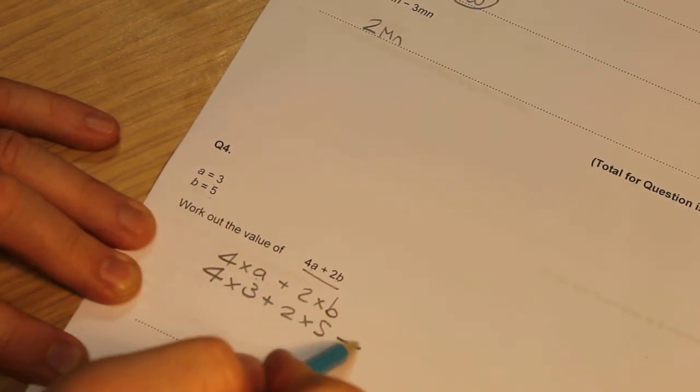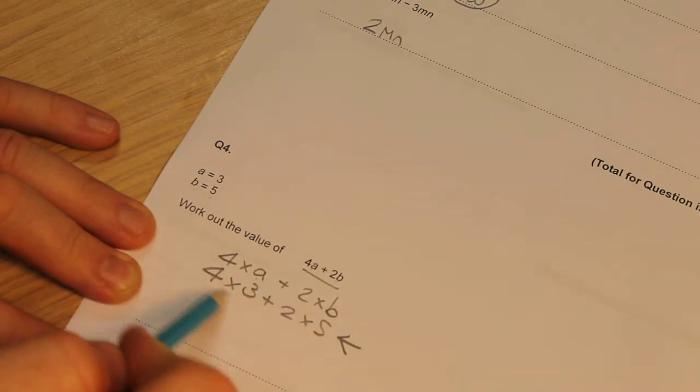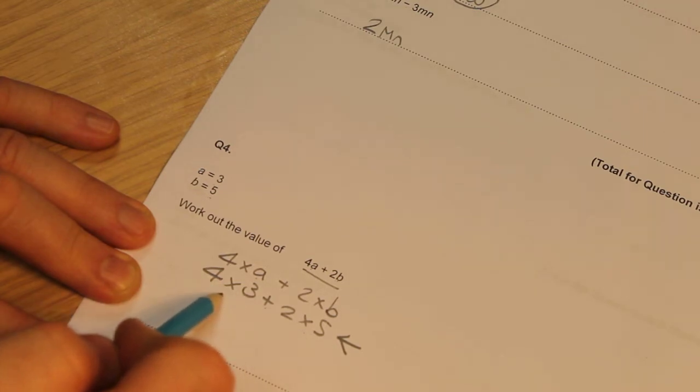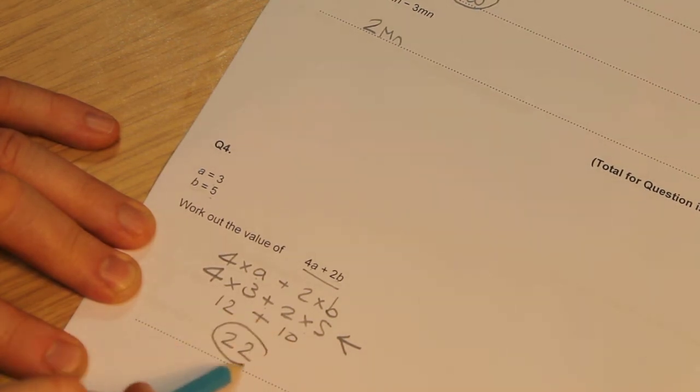This is what's known as the substitution line, and what I can do now is I can work out each of these, or work out this answer, but I must remember that I multiply before I do any adding. So there's 2 lots of multiplying to be done. So 4 times 3 is 12, 2 times by 5 is 10, and if I add those together, I get 22, and that is my answer.